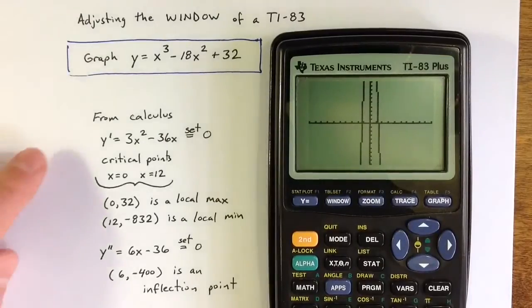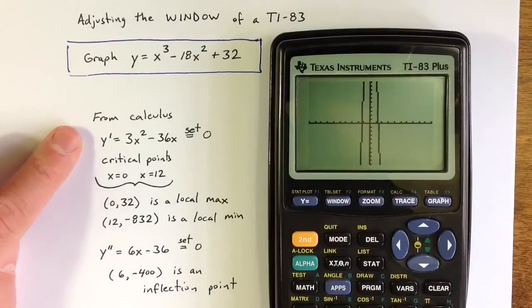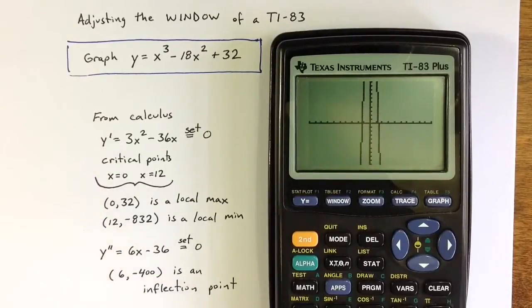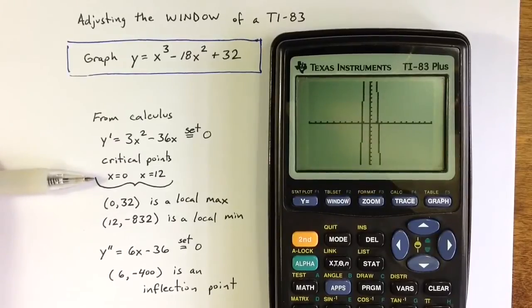And so from calculus, we can see some important points that I'd like to include on the graph. From the first derivative, we get critical values of 0 and 12. And at 0, we have a local maximum, and at 12 we have a local minimum. And from the second derivative, there's an inflection point at 6.